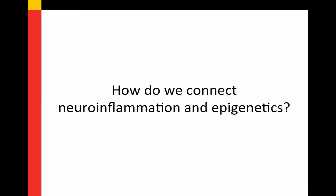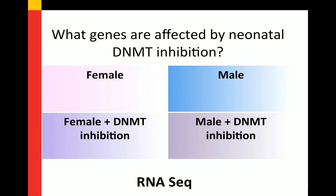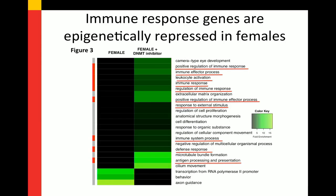Now connecting neuroinflammation and neuroepigenetics: when we looked at genes affected by neonatal DNMT inhibition, mast cell protease 2 stuck out, and gene ontology analysis revealed that immune response genes — positive regulation of immune response, immune effector, leukocyte activation, defense response, antigen processing and presentation — were epigenetically repressed in females. This is consistent with the idea that part of the suppression of masculinization is to shut down immune response genes. My hypothesis is that increased immune activation in males decreases DNMT activity, which de-represses immune response genes — creating a circular feed-forward loop.